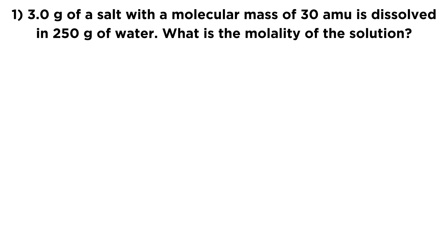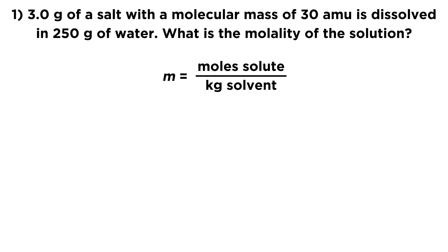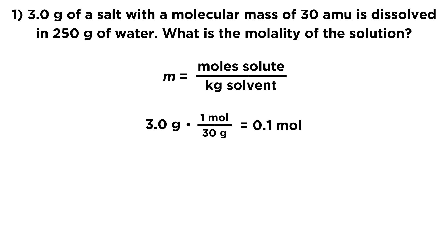Let's take a look at this first question. Molality means moles of solute per kilogram of solvent — a little different from molarity, since we're dealing with a mass of solvent rather than a volume of solution. We have 3 grams of salt with a molar mass of 30 grams per mole, so multiplying gives us 0.1 moles.